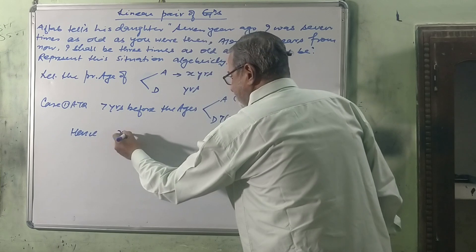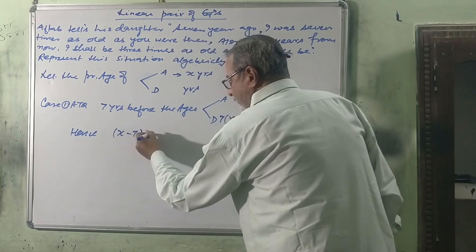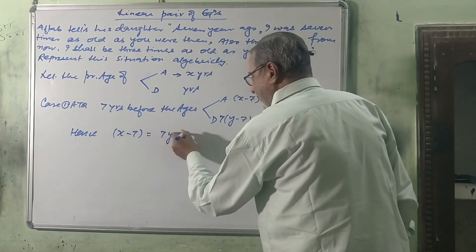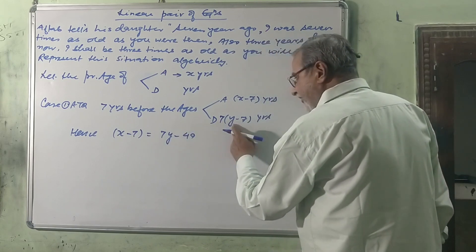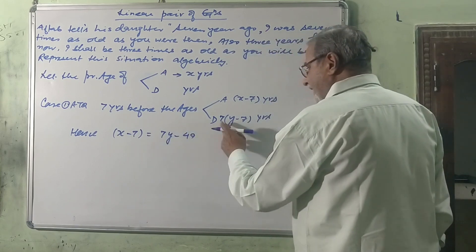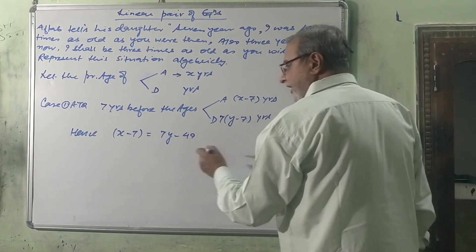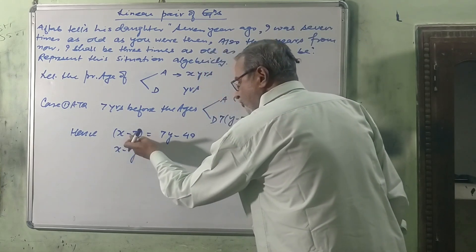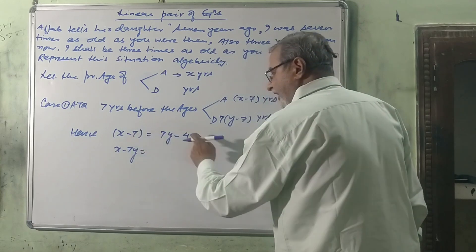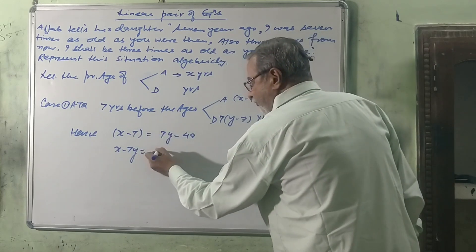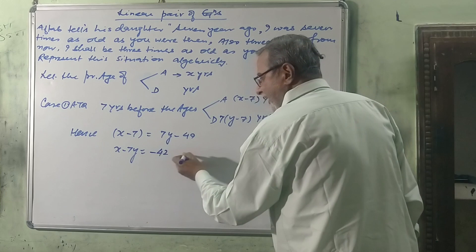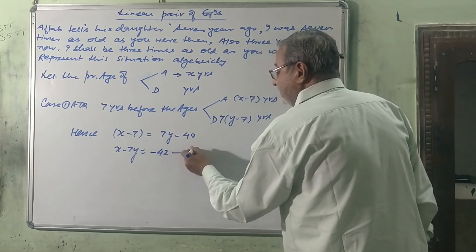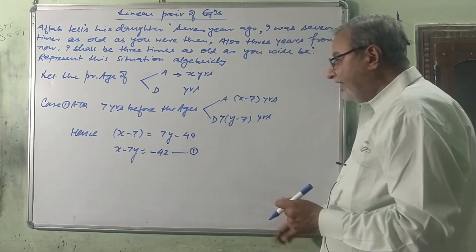x minus 7 equals 7y minus 49. Seven y and seven multiplied with seven is 49. And x minus 7y equals minus 7. Transfer from right hand side to left hand side, so it will be positive and the result is minus 42.